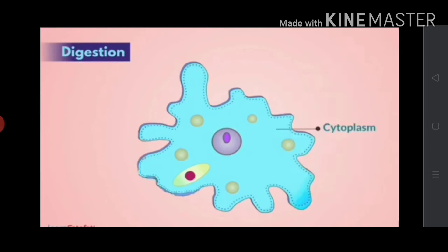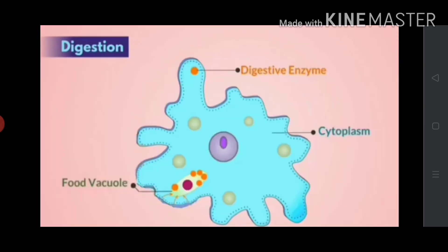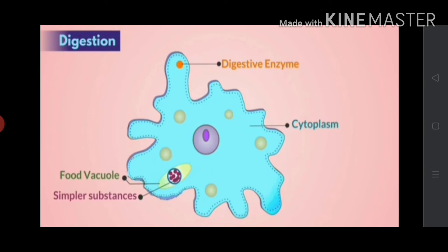Next step is digestion, that is the process of breakdown of complex components of food into simpler substances. The cytoplasm of amoeba secretes digestive enzymes into the food vacuole that contains the food particle. These enzymes act on the food particle and convert it into simpler substances.